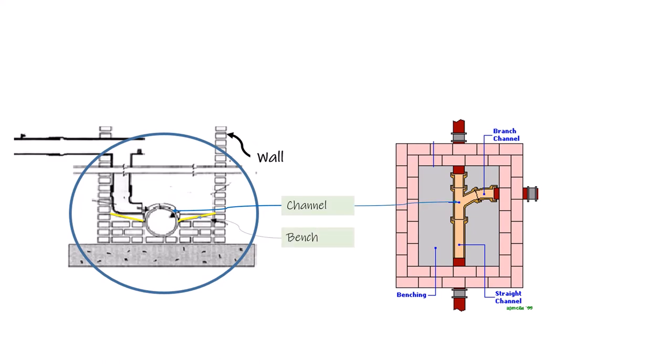Along with the channel comes the bench of a manhole. A manhole bench is the bottom section of the manhole made of mortar or brick, poured between the walls of the manhole and the sewer pipes. The main purpose of benching is to direct flow back to the channel during any blockage issues.